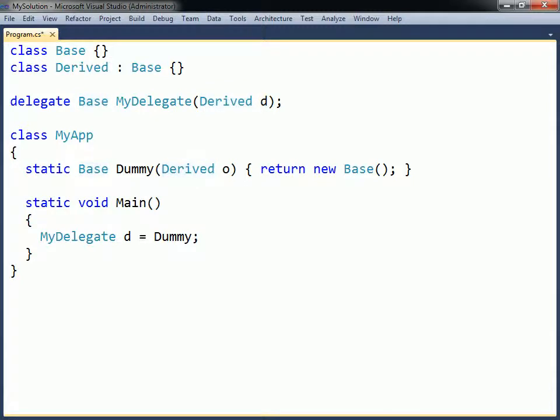However, a method does not have to match the signature exactly. A delegate object can also refer to a method that has a more derived return type than that defined in the delegate, or that has parameter types that are ancestors of the corresponding delegate's parameter types.